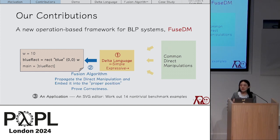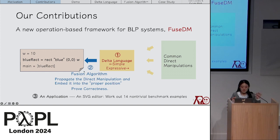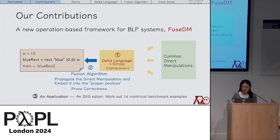The main contribution is FusedDM, a new operation-based framework for bidirectional live programming systems. First, a simple and expressive delta language is designed — simple to fuse into source programs and expressive enough to encode common direct manipulations. Second, a fusion algorithm propagates direct manipulations into general-purpose functional programs at proper positions, with proven correctness: the fused program re-runs to produce the output applied by that manipulation. Third, a prototype SVG editor application is implemented with 14 non-trivial benchmarks.